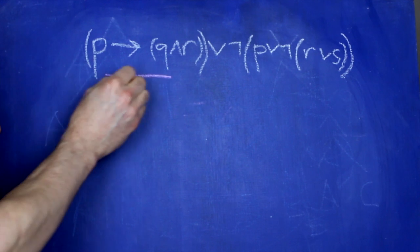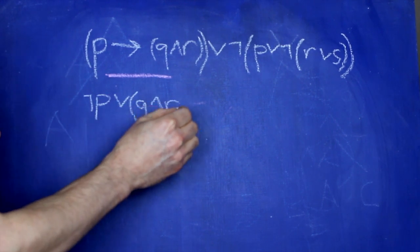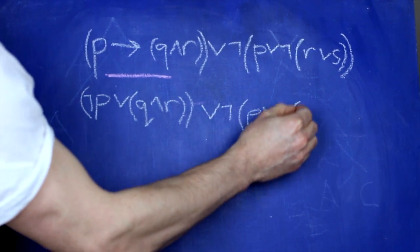Step one, we first have to eliminate the arrows. There's one here, and it's going to become this. The rest of the sentence stays the same.